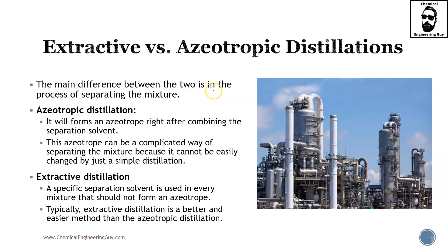The main difference between the two is also in the process of separating the mixture. Azeotropic distillation will form an azeotrope right after combining the separation solvent. The azeotrope can be a complicated way of separating the mixture because it cannot be easily changed by a simple distillation. Azeotropic distillations can get more complicated and more messy than a normal distillation, and even more complicated than an extractive distillation.